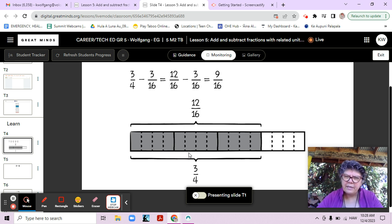We don't see any subtraction in the tape diagram, though, do we? We just see them using the tape diagram to rename the fractions. That's pretty interesting. And then 12 minus 3 is 9, and 16 stays the same because it's broken into 16 parts. All right, let's look at another one.